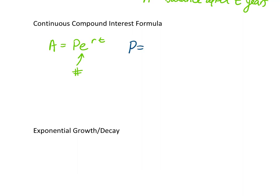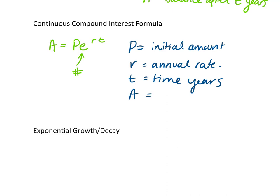So in this case, P is that initial amount. It's P because it's principal, really. r, again, is that annual rate. t is time in years. And in this case, A is the balance after t years.